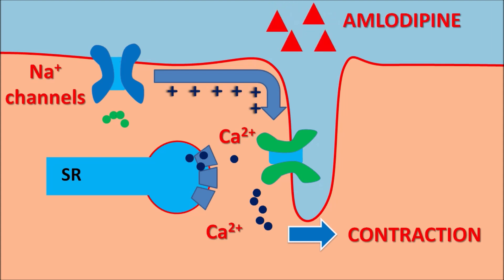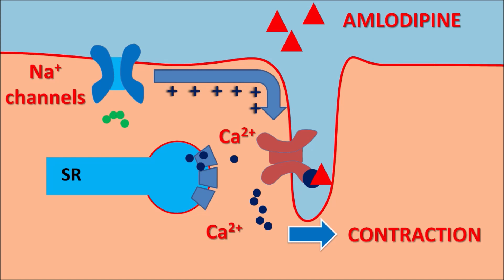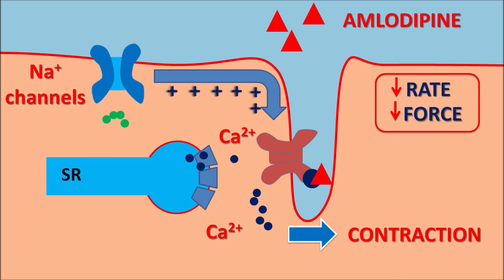Amlodipine, when administered, can be protonated within the plasma. In this protonated form, it acts on the L-type calcium channels by binding to the dihydropyridine binding site, thereby inhibiting L-type calcium channel activity. When these calcium channels are inactivated, calcium cannot enter and cannot produce contraction of the cardiac muscle. In this way, amlodipine reduces both the rate and force of contraction of the heart.